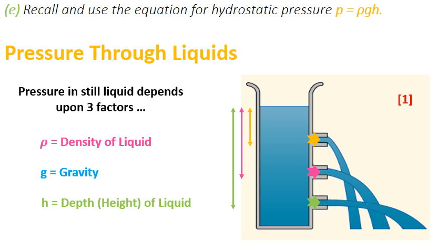So if we say that density, gravity, and depth are three important factors which affect the pressure in still liquid, we can write our equation as pressure equals rho g h.